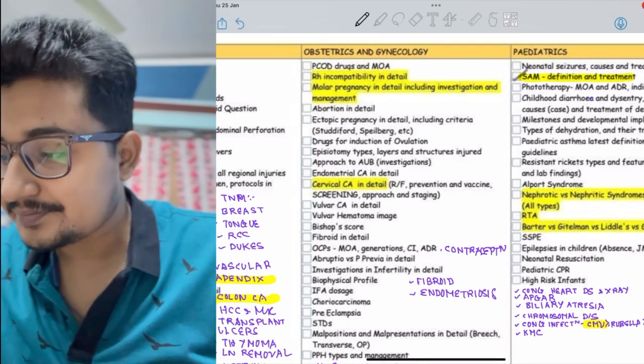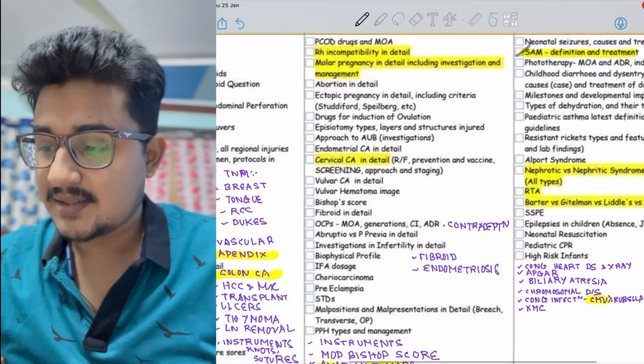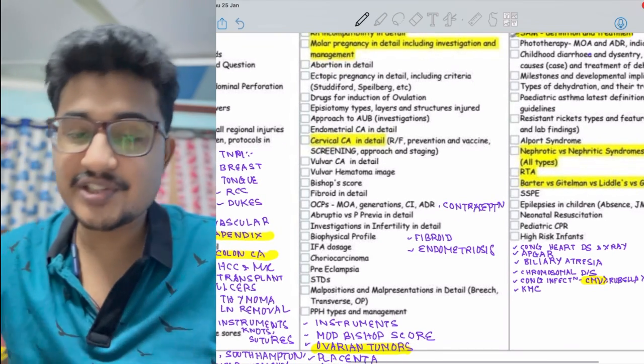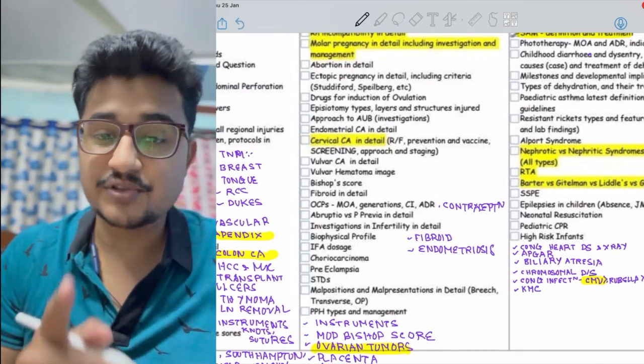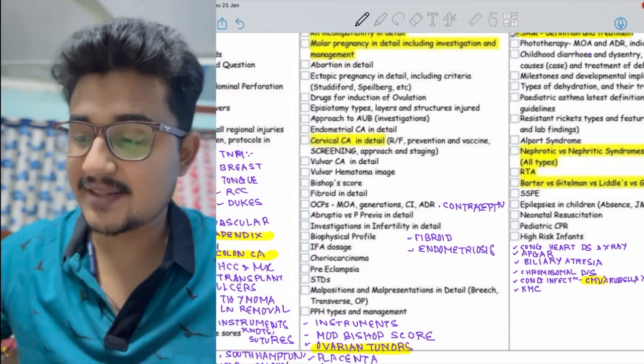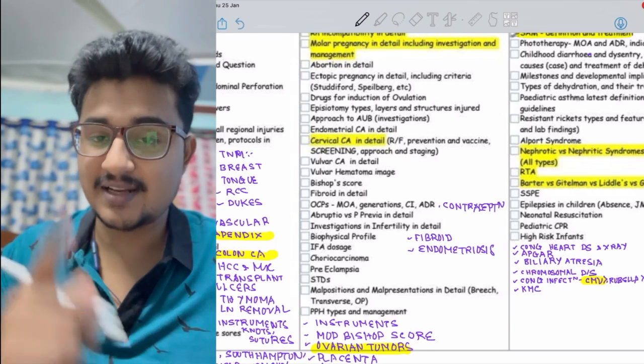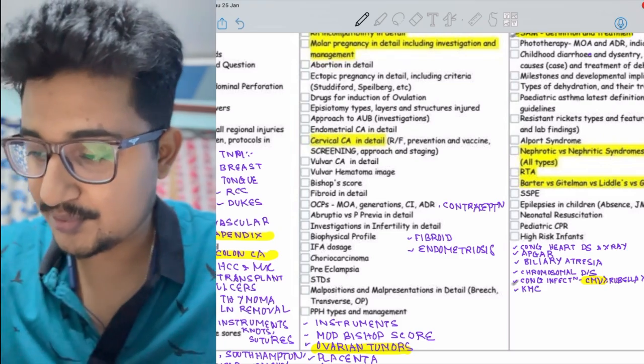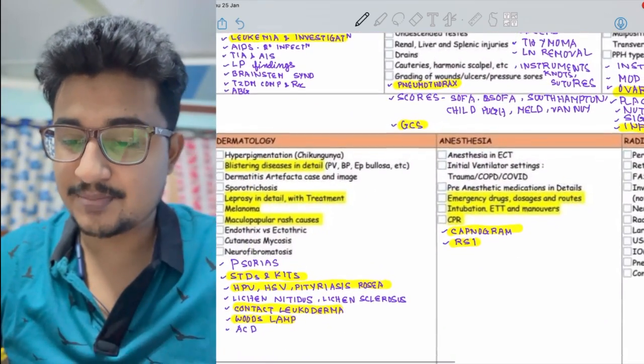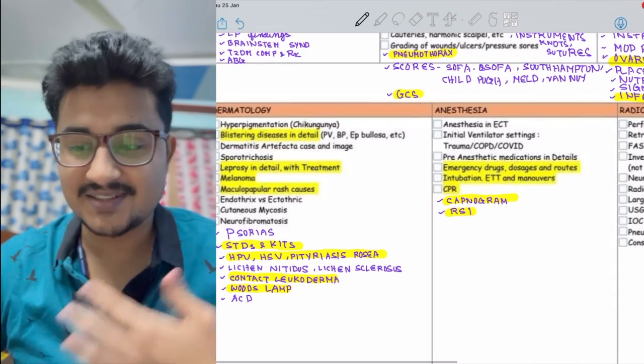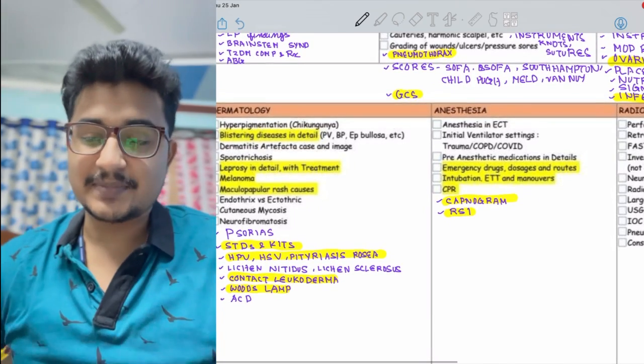In pediatrics, the SAM definition has been asked multiple times. Nephrotic-nephritic syndromes and congenital infections are very important for INICET. They've asked about CMV continuously for three years. I think this year also they would ask in any of the INICET.